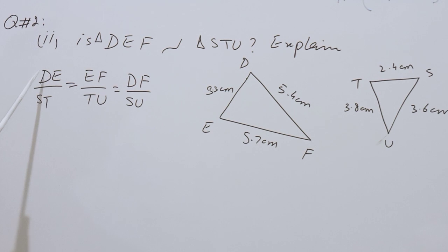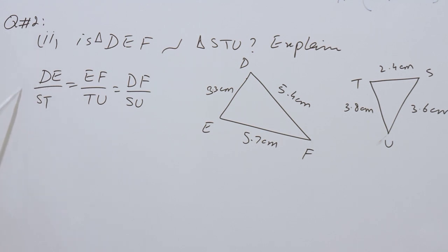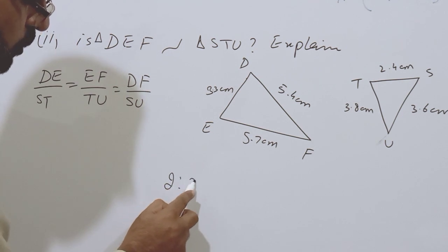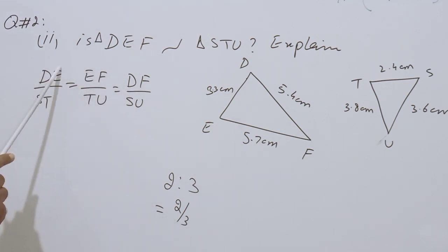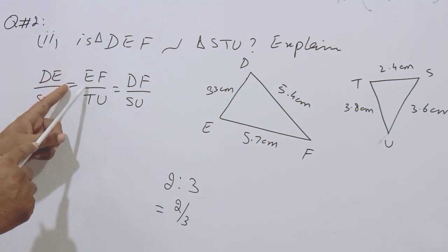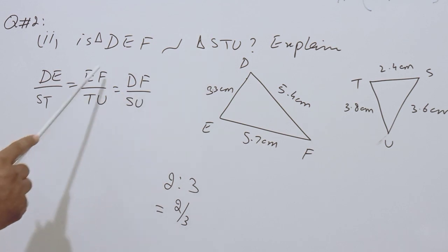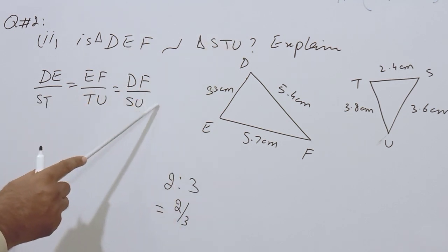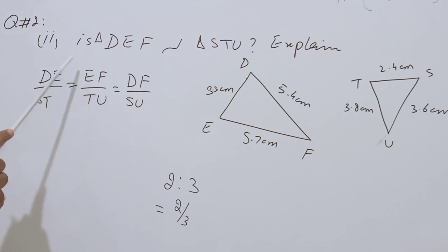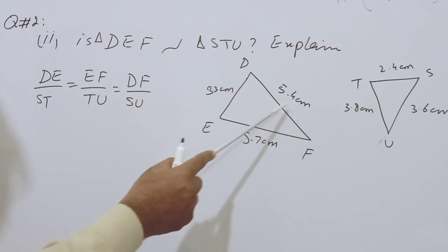I will write the corresponding sides in the form of ratio: DE ratio ST. You know that we can write a ratio in the form of a fraction — for example, 2 ratio 3 can be written as 2 over 3. So I have written the ratios of the corresponding sides as fractions. If the ratios are equal then the triangles will be similar, otherwise not. So: DE over ST equals EF over TU equals DF over SU. Now we will put the values of all sides into this equality and simplify them.